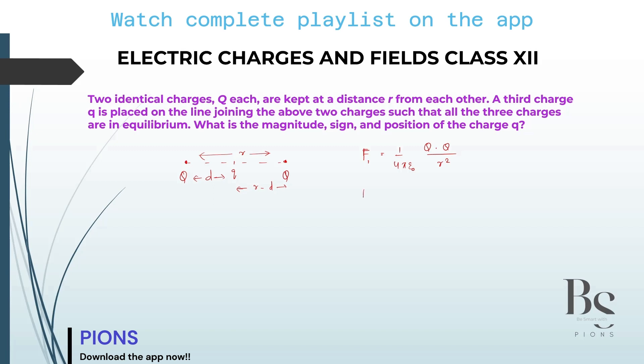So the new force will be F2, which will be equal to 1 by 4π epsilon naught, Q times q upon separation. You can take D or you can take R minus D, it doesn't matter. That will give you the position from either the first charge or the second charge. Should I take D square or R minus D square in exams? Both are fine. Anyways, the answer will be fixed. So let me take it as D square.